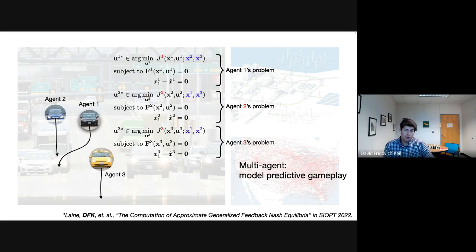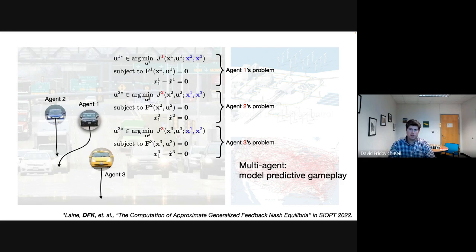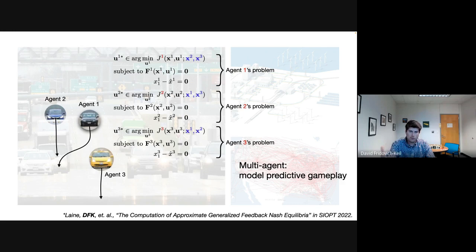Contrast that with the game view: take the same three agents and imagine they're all rational decision makers. Agent one, agent two, and agent three are simultaneously minimizing their own objectives, and each one's objective depends on the decisions of the others. They all need to start at their current estimated position and be dynamically feasible for their respective vehicles — maybe a lighter Prius has different dynamics and a shorter stopping distance. The decisions of each driver factor into the objective of every other agent. This is a game.